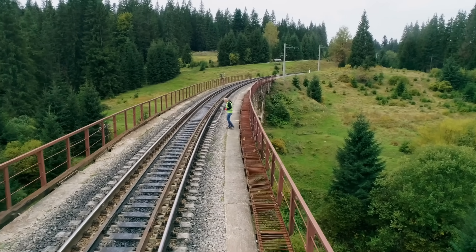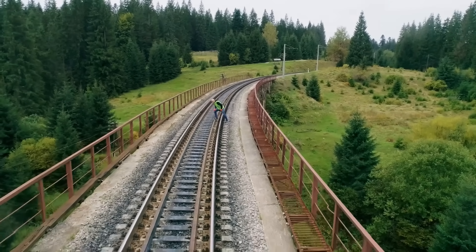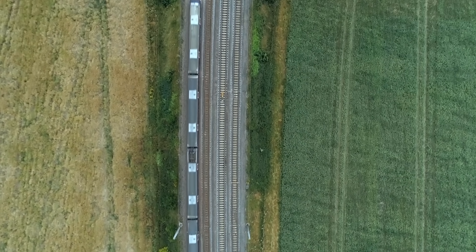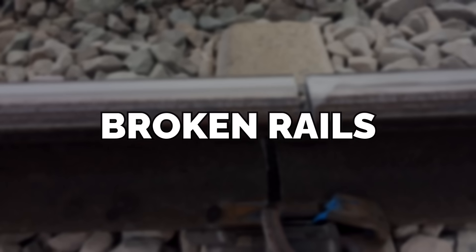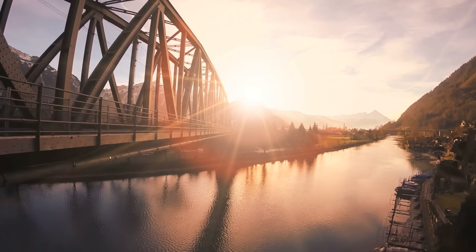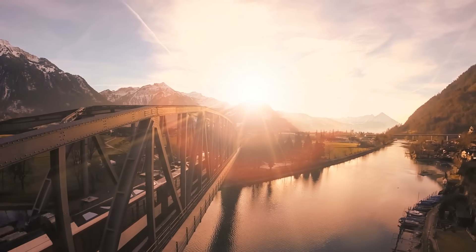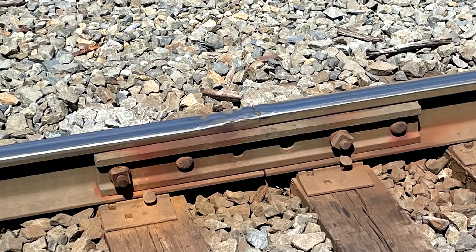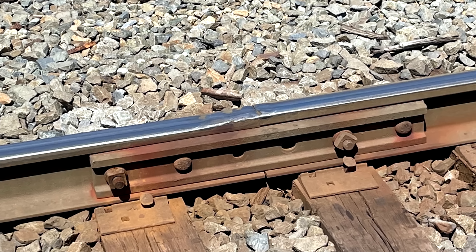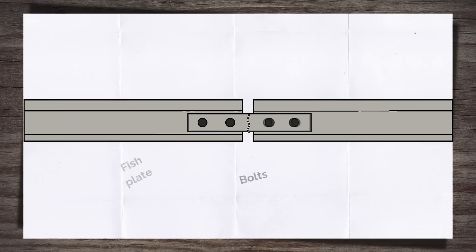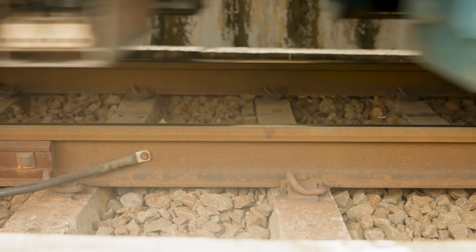Let's move on to broken rails. The rail's primary function is to provide the continuous running surface for a train wheel, and a break in the rail interrupts that. In a joint, the ends are restrained by fish plates, limiting any movement. However, if both fish plates are broken with the rail ends free to move, that is a broken rail. Rails don't typically break for no reason — it's normally a culmination of different factors, but one thing that's normally always present is vertical movement or voiding that stresses the rail.